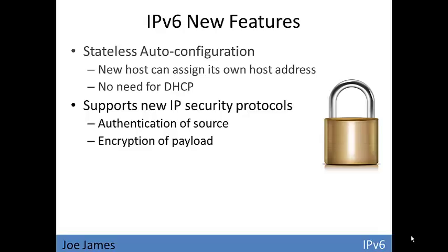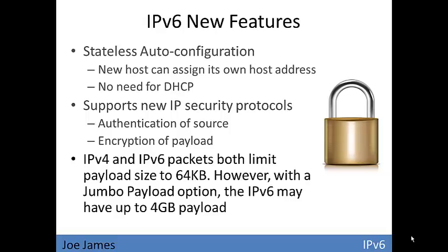Two key areas where IP security is implemented in IPv6: authentication of source — in IPv4 there was essentially no way to verify where a packet came from, but now you can actually authenticate the transmission source — and encryption of the payload for security of data while it's in transit. Another key feature is the jumbo payload option. By default both IPv4 and IPv6 limit packet size to 64 KB, but IPv6 supports a jumbo datagram that can be as large as 4 GB.